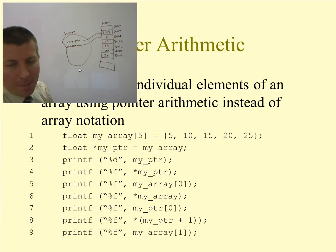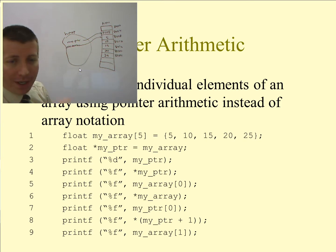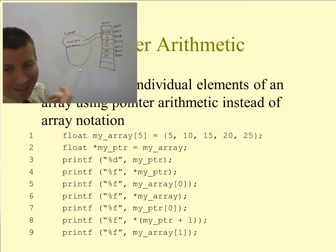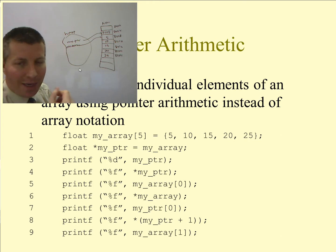Line 7 uses myPointer[0] — this does compile and work, but it's very dangerous. It works only because myPointer happens to be pointing at an array. If it weren't pointing at an array, the code would still compile but crash at runtime. Using array notation on a pointer is strongly discouraged.